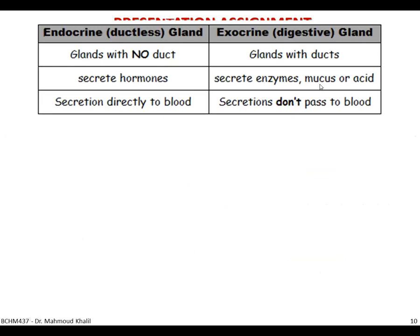The difference between endocrine glands and exocrine glands: endocrine glands have no duct, while ducts are always present in exocrine glands. Endocrine glands secrete hormones, while other glands secrete enzymes, mucus, or even acid as from the stomach wall. The secretion of an endocrine gland goes directly into the blood without a duct, while secretions from digestive glands usually go into cavities — like pancreatic enzymes, which are released inside the digestive system.